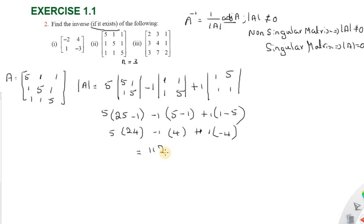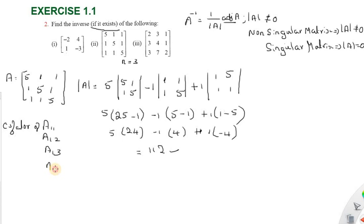So it is a non-singular matrix since determinant of A is not zero. Now we find the adjoint of A. We need cofactors A11, A12, A13, A21, A22, A23, A31, A32, A33.